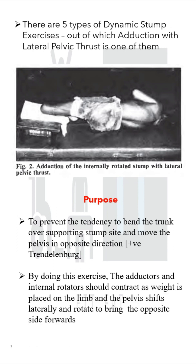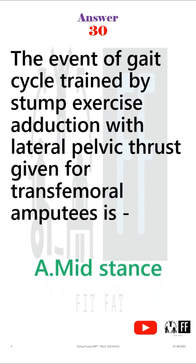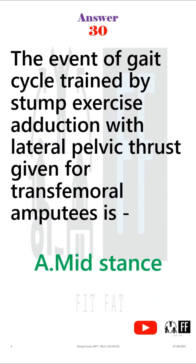By doing this exercise, the adductors and the internal rotators should contract as weight is placed on the limb, and the pelvis shifts laterally and rotates to bring the opposite side forwards. The pelvic shift occurs in mid stance phase. So the answer is option A — mid stance.